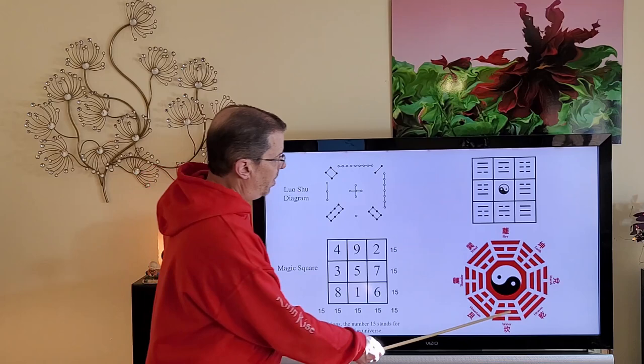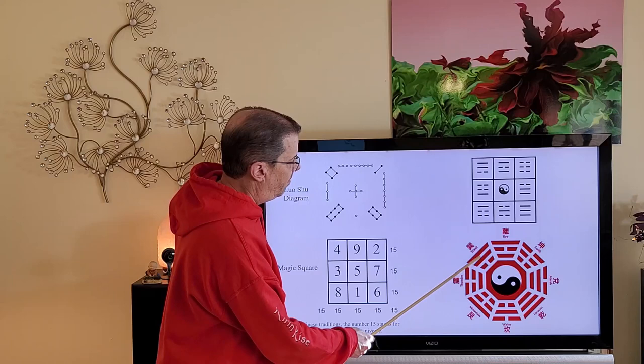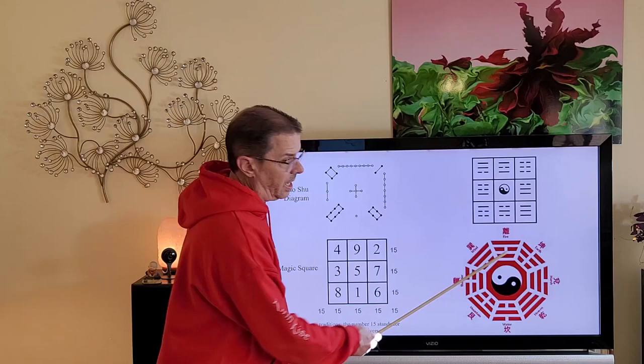The numbers show the location of each trigram in the Later Heaven Sequence. So one, two, three, four, five, six, seven, eight, and nine.